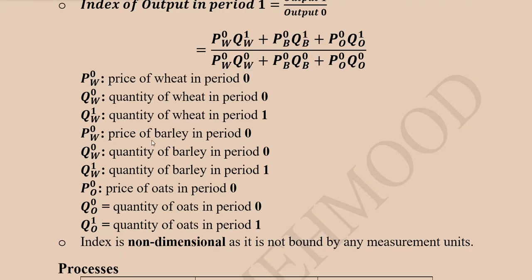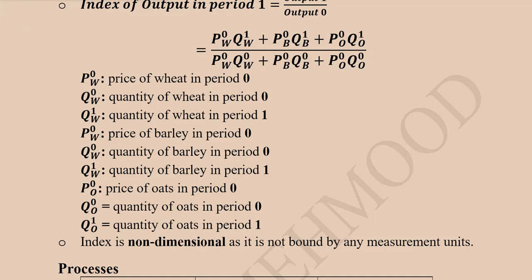An important property of the index number, besides the notation, is its non-dimensionality. It is not bound by any measurement unit used for various outputs. We take the weighted average of the individual outputs being produced, and the answer is not affected by the units used to measure those outputs.